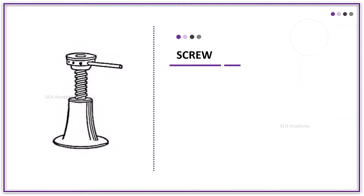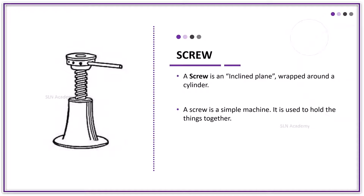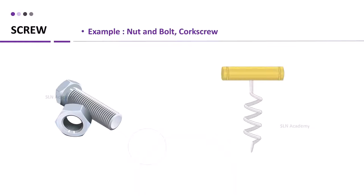A screw is an inclined plane wrapped around a cylinder. A screw is a simple machine used to hold things together. The bottle cap, the light bulb, cord jack are few examples of screws. Nut and bolt, corkscrews are also examples of a screw. The screw consists of a narrow inclined plane wrapped around a cylinder.